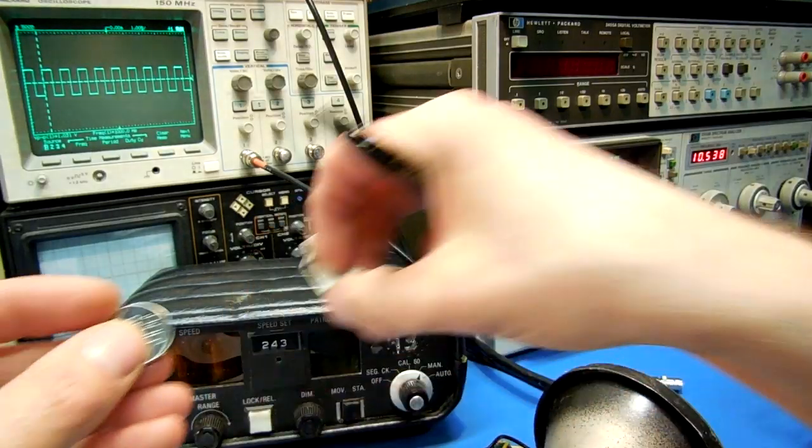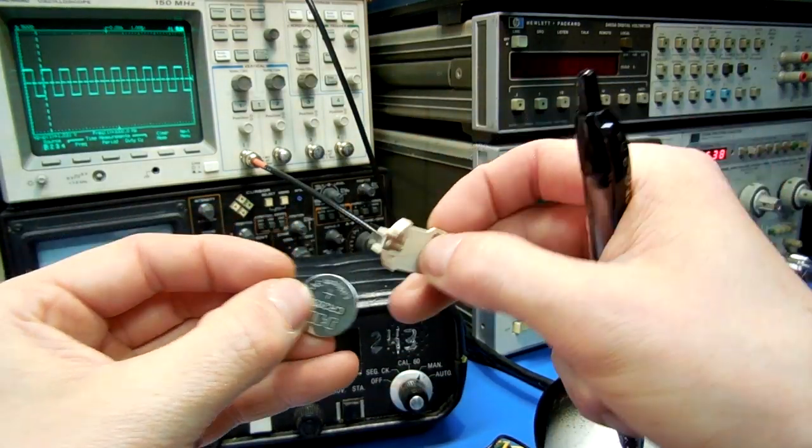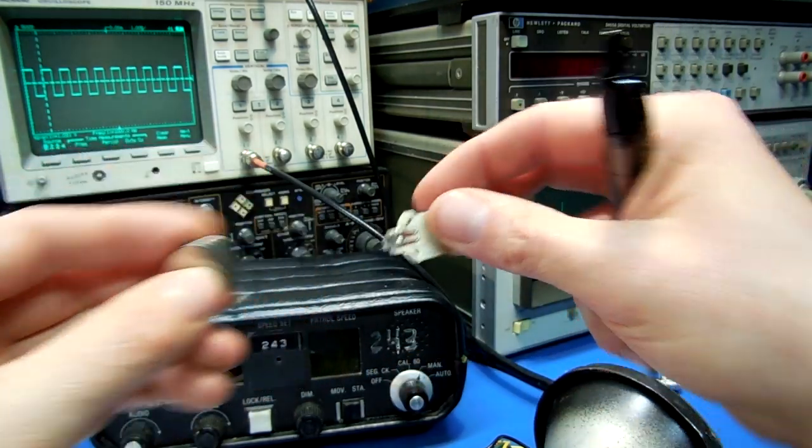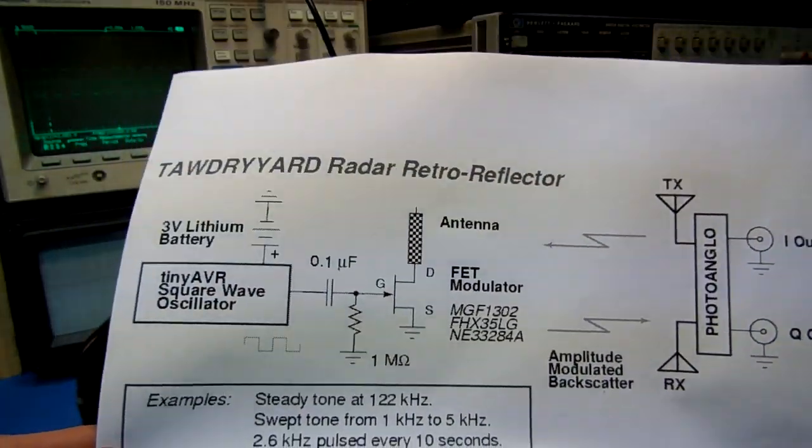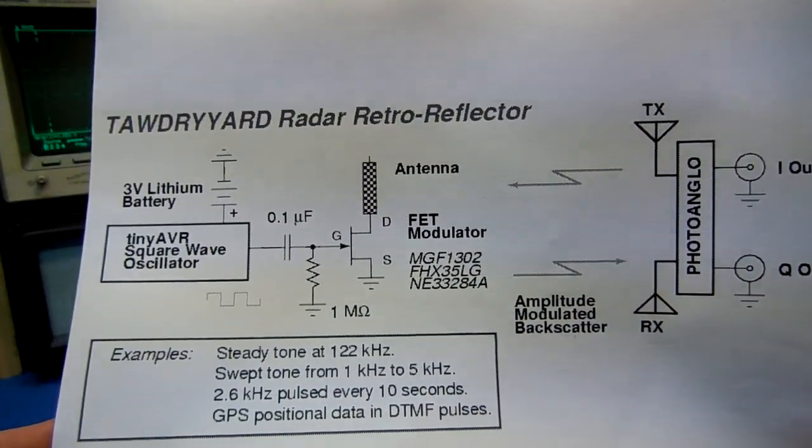Ever see one? It's essentially these devices, those little coin cells, that's all they are. The current draw is very very low so they can operate for up to a year.